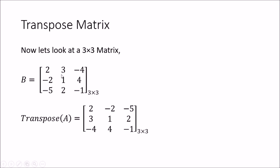In a similar manner you can find the transpose of a 3 by 3 matrix. Take the first row 2, 3, -4 and make it the first column; the second row -2, 1, 4 becomes the second column; and the last row -5, 2, -1 becomes the third column of the transpose matrix. Now we have all the basic requirements to find the solution to a set of simultaneous equations using matrices.